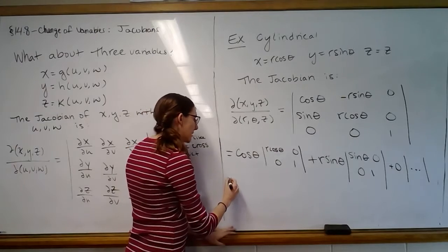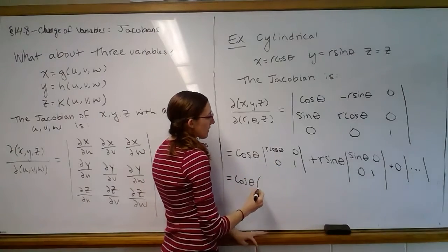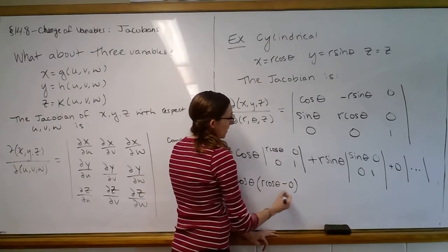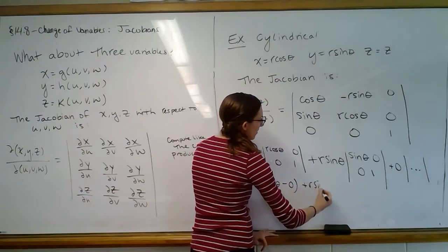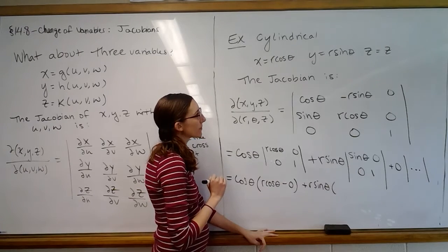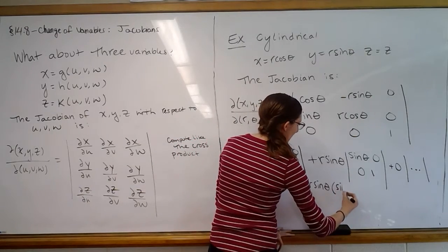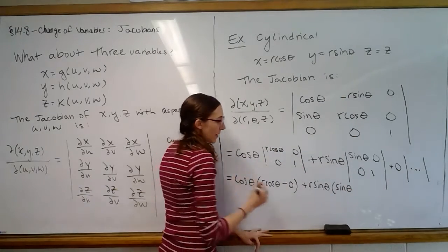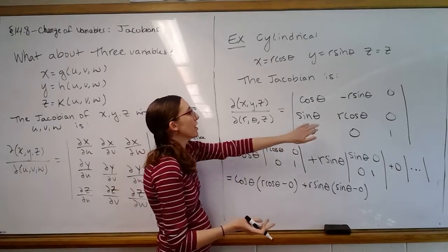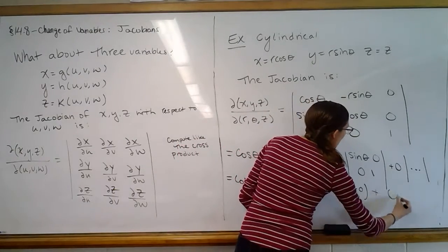So then working through these, we've got cosine theta times the quantity - multiply the main diagonal - so we've got r cosine theta, and then we have minus zero. And then we have plus r sine theta times sine theta times one, and then minus zero. And then that whole last thing, the determinant actually also would have been zero, because we would have had sine theta times zero minus r cosine theta times zero. But regardless, it's all just plus zero.